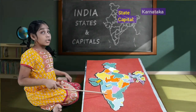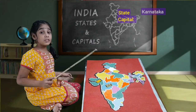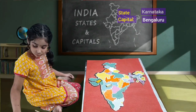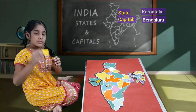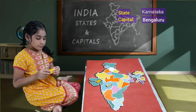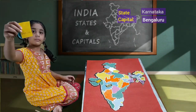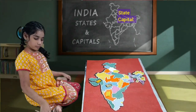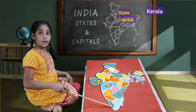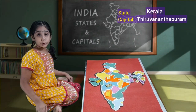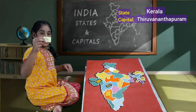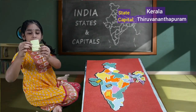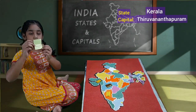Next we'll have Karnataka. Karnataka's capital is Bangalore. This is Karnataka. If we open the chat, we'll have Bangalore. Next we'll have Kerala. Kerala's capital is Thiruvananthapuram. This is Kerala. If we open the chat, we'll have Thiruvananthapuram.